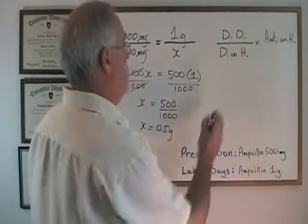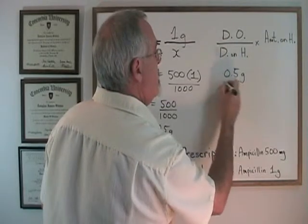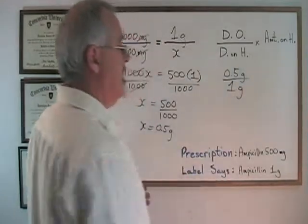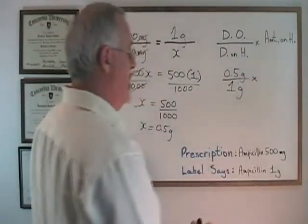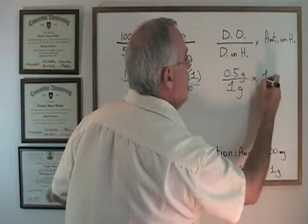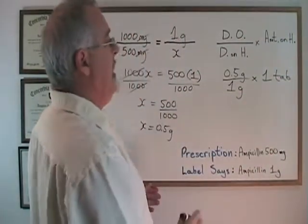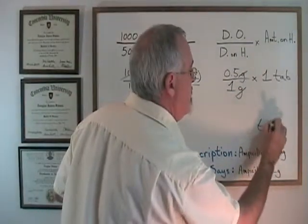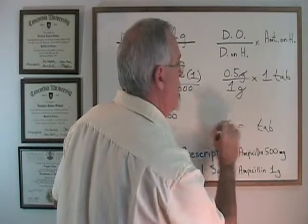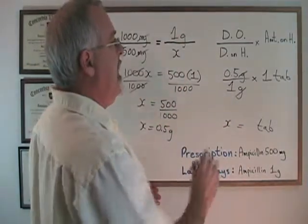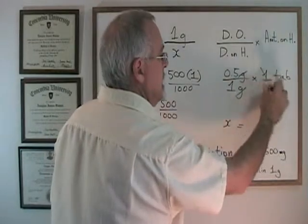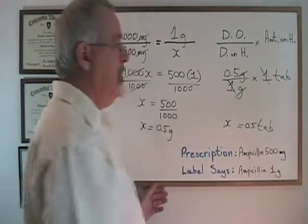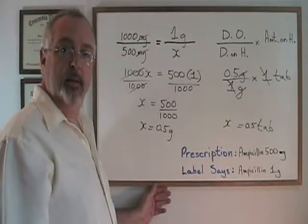So we will fill it in. 0.5 grams dose ordered over 1 gram dose on hand, times amount on hand, which is one tablet. The grams cancel. So our answer will be in tablets. The ones also cancel. So our answer is 0.5. We will pour 0.5 tabs for the patient.